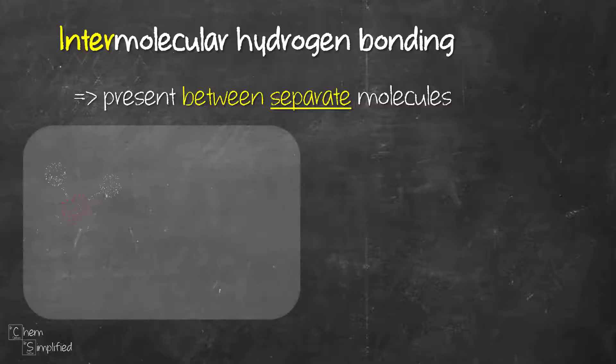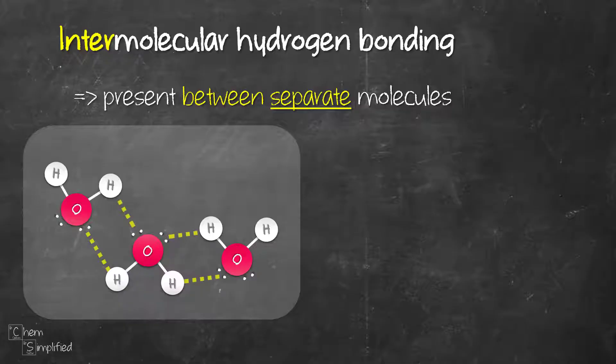Take water for example. Each water molecule has hydrogen bonded covalently to oxygen, which is electronegative. Intermolecular hydrogen bond will happen between O of one water molecule with H of the other water molecule. That's between two molecules, which is why it's called intermolecular hydrogen bonding. There are lots of hydrogen bonding occurring between different water molecules in this example.